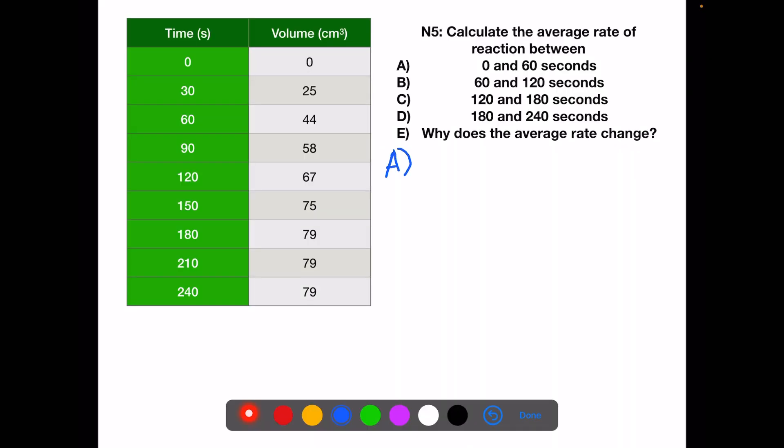For A, the average rate will be 44 minus 0 divided by 60 minus 0. This will be 0.73 cm³ per second. For B, we will have 67 minus 44 all divided by 120 minus 60. This will be 23 divided by 60, which is 0.38 cm³ per second.